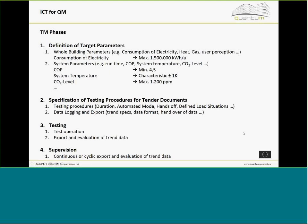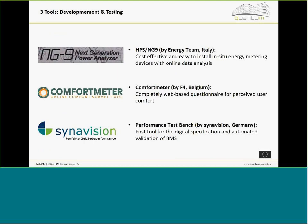Within QUANTUM we are looking at three tools. NG9 is a tool where you can measure all kinds of values — temperatures, CO2 levels, electricity, current — in a building and put the data in the cloud. The Comfort Meter is a web-based questionnaire tool that asks users how they perceive comfort in buildings, and through sophisticated statistical analysis it evaluates how indoor environmental qualities are perceived compared to other buildings.